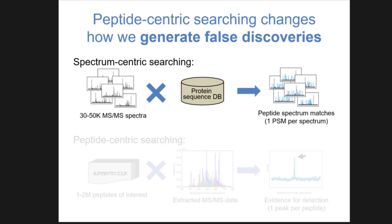This is how you would typically analyze DDA data, where you would have like 30,000 to 50,000 spectra, and then see which peptide in a protein sequence database lined up best to that spectrum, and then report one peptide-spectrum match per spectrum that you queried for. So every spectrum gets a peptide, and then you have to decide afterwards if that's a good or a bad match.